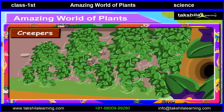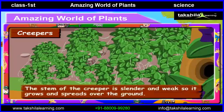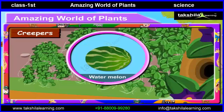Let us learn about creepers. Plants that creep over the ground are called creepers, like the pumpkin plant that you can see on the ground. The stem of the creeper is slender and weak, so it grows and spreads over the ground. Watermelon is also an example of a creeper.